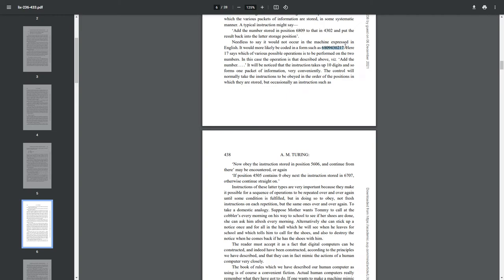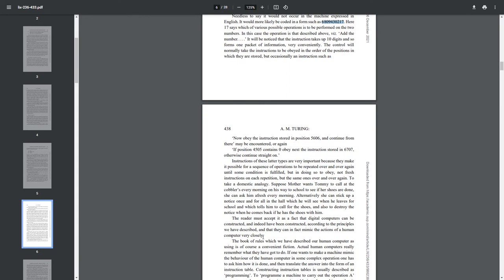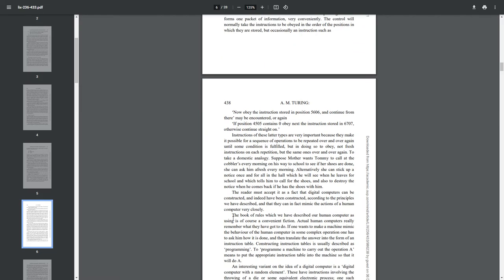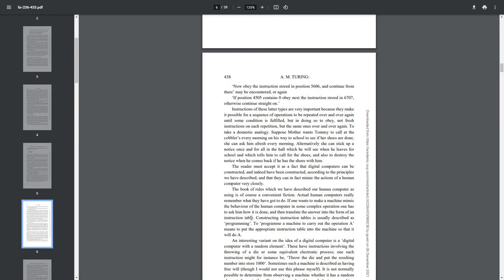Remember, and he thinks it's important too. Remember, we are talking about human computation. We're talking about mind, pen, and paper. The book of rules which we have described our human computer as using is, of course, a convenient fiction. Actual human computers really remember what they have got to do. If one wants to make a machine mimic the behavior of the human computer in some complex operation, one has to ask him how it is done and then translate the action answer into the form of an instruction table. I think the more modern way to say instruction table would be decision matrix. Constructing instruction tables is usually described as programming. To program a machine to carry out the operation A means to put the appropriate instruction table into the machine so that it will do A.